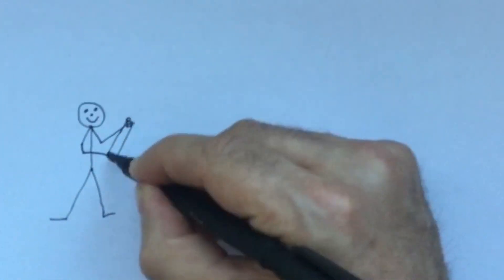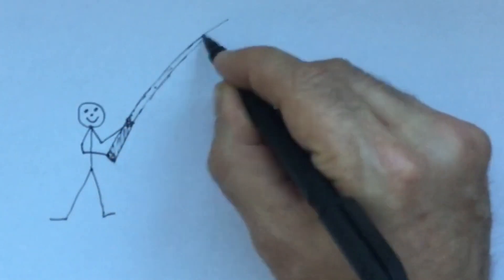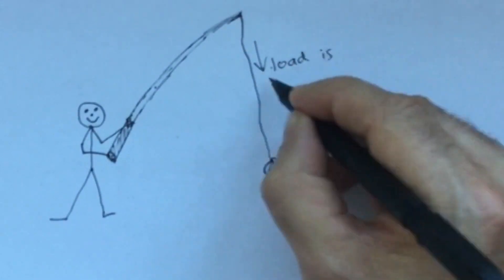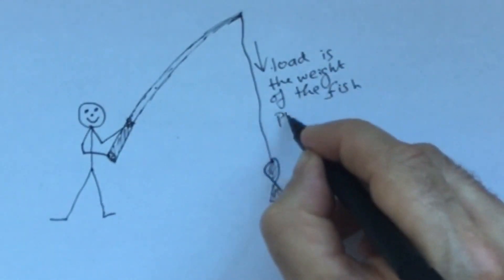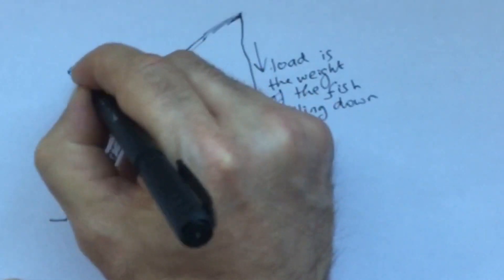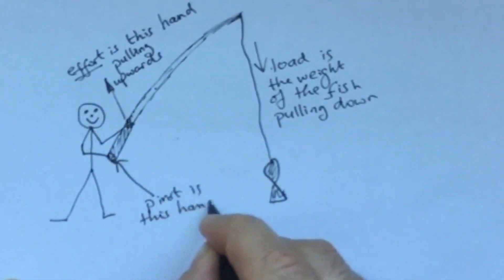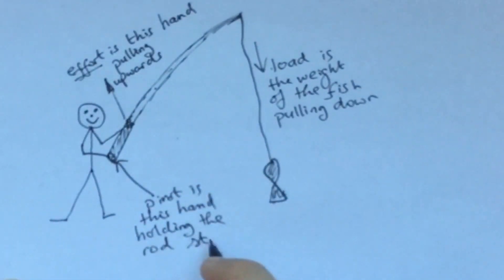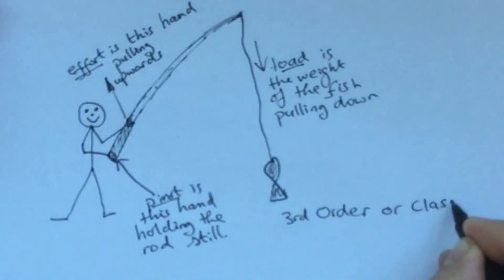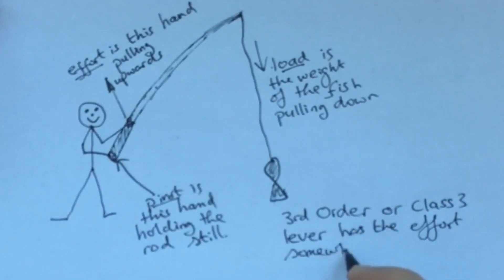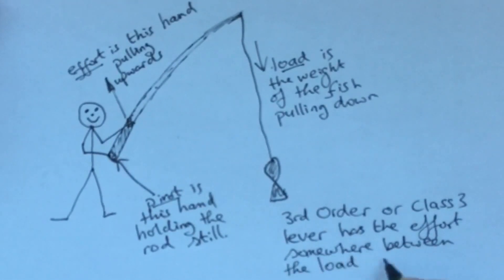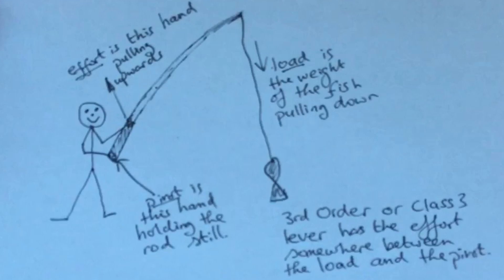Another excellent example of a third order lever is a fishing rod. At one end you've got the load, which is the weight of the fish pulling down. The pivot is the bottom of the two hands holding the fishing rod still, and the effort is the upper of the two hands pulling the fishing rod back. Even though this type of lever gives the load more leverage and makes it harder to lift the fish out of the water, what it does do is allow you to move the end of the fishing rod much much faster.